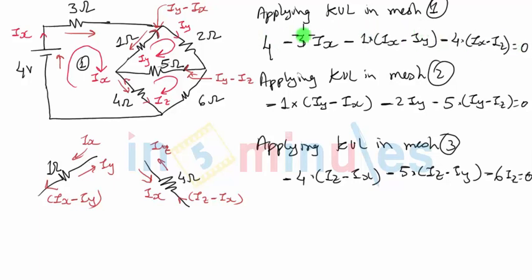So if you simplify the first equation, you can see we have three IX, one IX here, which is four and four, eight IX minus eight. So the first equation becomes 8IX minus IY minus 4IZ, and I'll keep this constant 4 on the same side.